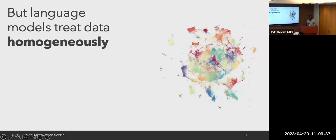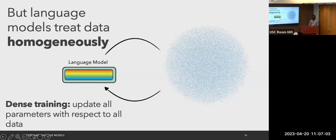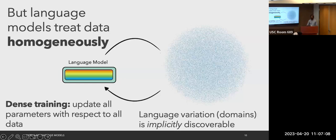Despite all this heterogeneity in language, standard recipes for training language models treat all data homogeneously. Instead of explicitly conditioning on language variation, we flatten out all the clusters, treat each sample as i.i.d., and train in what I call dense training — updating all parameters of the model with respect to all data. This makes domains implicitly discoverable in the model instead of explicitly conditioning on them, assuming we'll fit all domains equally well.